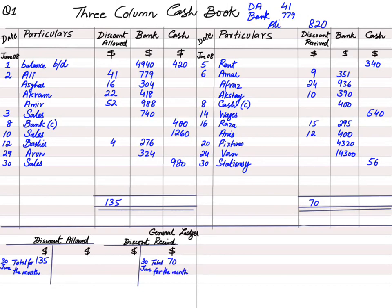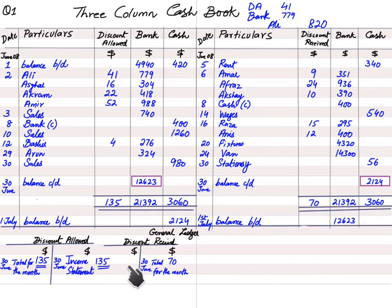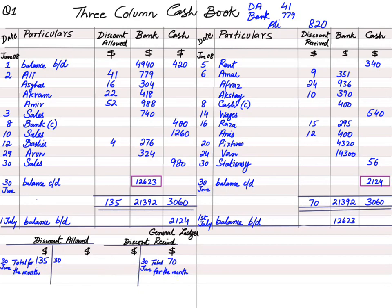At end of month, discount allowed and discount received balances are also transferred to the income statement. Discount allowed (debit balance of 135) is transferred: debit income statement, credit discount allowed account. Discount received (credit balance of 70) is transferred: debit discount received account, credit income statement. All income and expense accounts are closed to the profit and loss / income statement at month end.